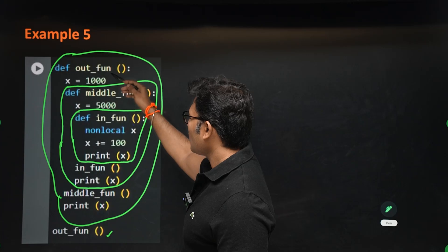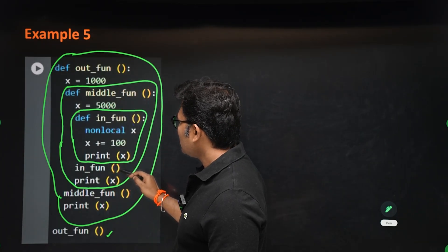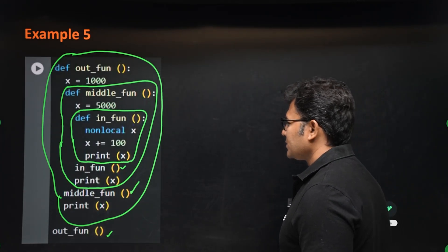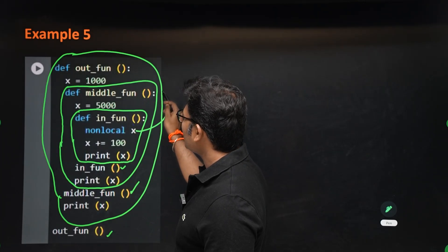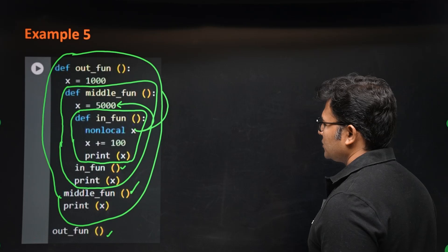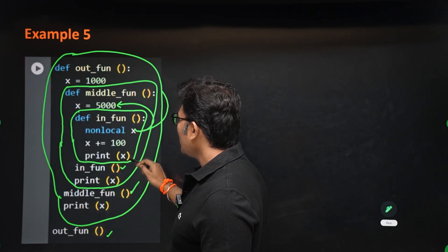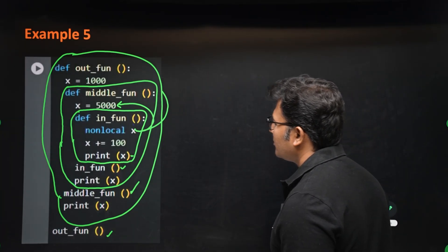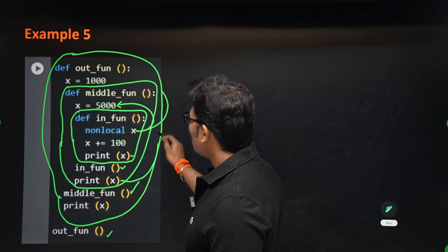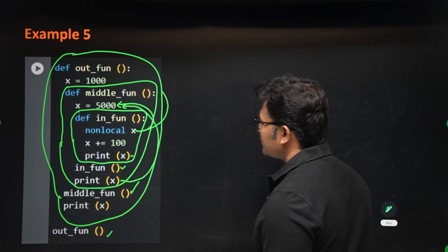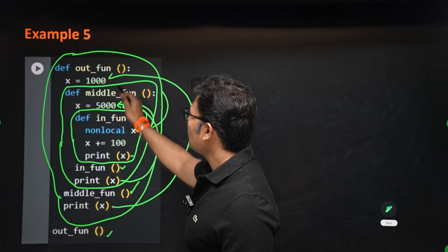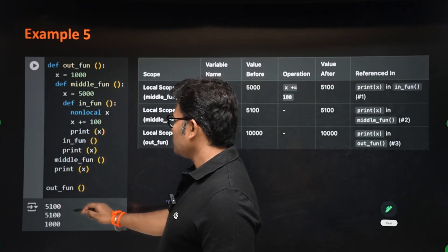When the outer function is called, it calls the middle function, which calls the inner function. Inside the inner function, 'nonlocal x' refers to the closest enclosing x, which is 5000 (in the middle function). Adding 100 gives 5100, which is printed. Back in the middle function, x is now 5100, so 5100 is printed again. In the outer function, the local x is 1000, so 1000 is printed.